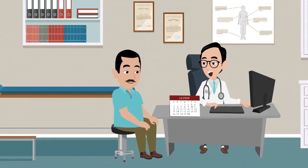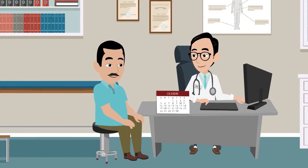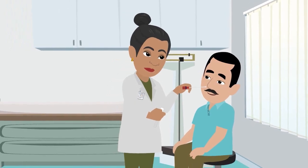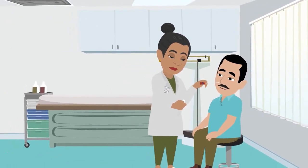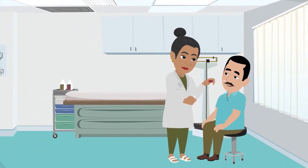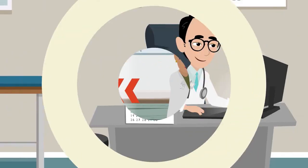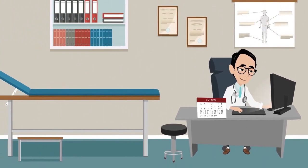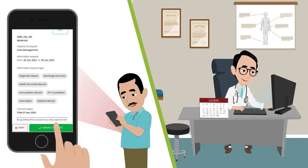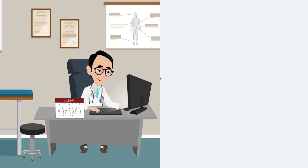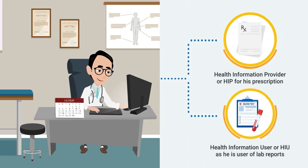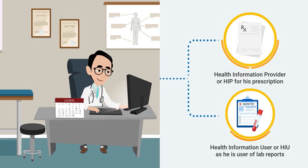HIP and HIU can be understood with an example. Pursuant to a consultation with Dr. Rashid for fever, Rahul got his tests done at ABC Labs. ABC Labs requests the prescription, which Rahul shares by approving on the Arogya Setu app. Once tests are done, Dr. Rashid, through his Hospital Management Information System, sends a request to Rahul for ABC Labs reports, which Rahul approves. In this case, Dr. Rashid is the Health Information Provider (HIP) for his prescription and the Health Information User (HIU) for lab reports, as he is the creator of the prescription and the user of the report.